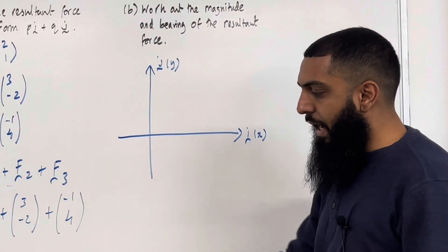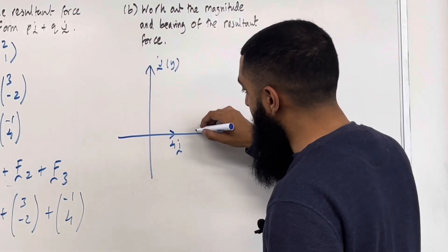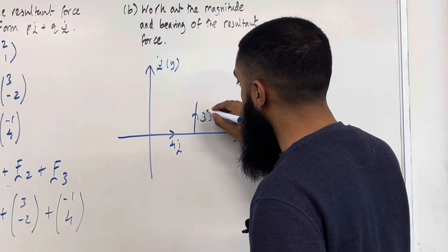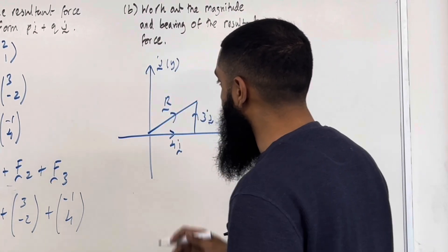So, I've got 4I plus 3J. That's 4 units to the right, 4I. And 3 units going up, 3J. So, that there ladies and gents is my resultant force R. I'm going to redraw this triangle.